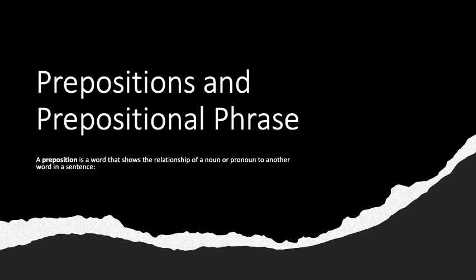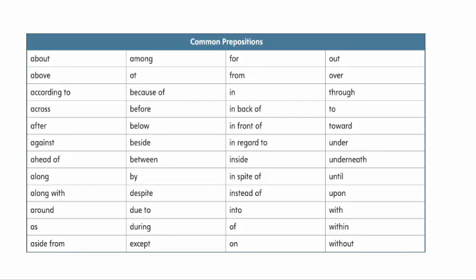Let's look at some examples of prepositions. You're probably familiar with these words — you've known them since you probably learned English in first grade. Some of the common prepositions are: about, among, for, from, in back of, in front of, in regard to, inside, beside, in spite of, instead of, upon, until, underneath, and so on. You'll be provided with the whole list of prepositions.